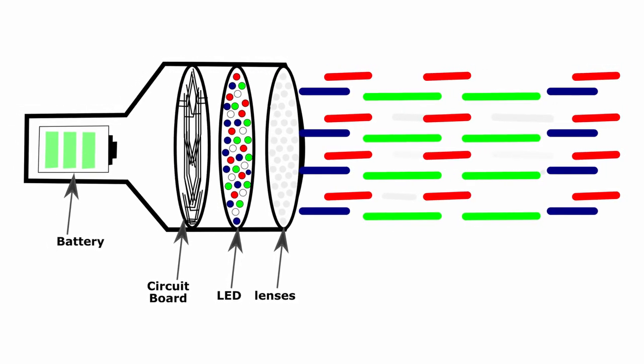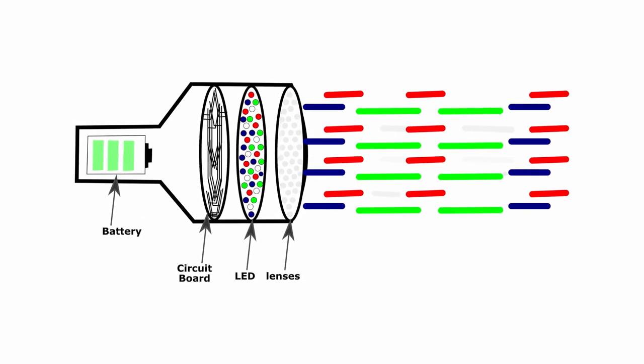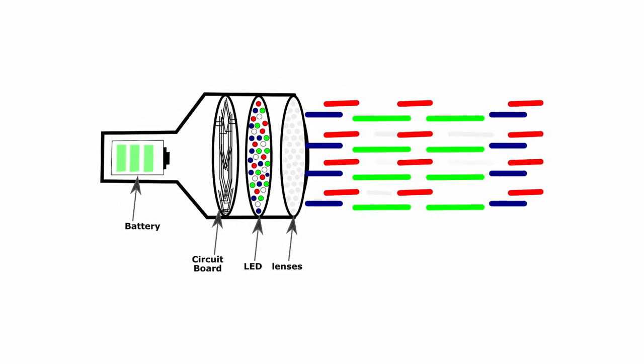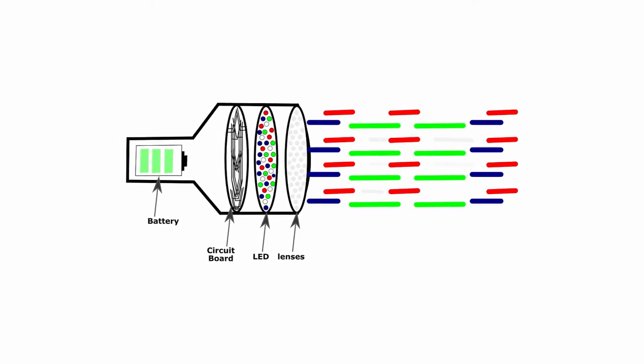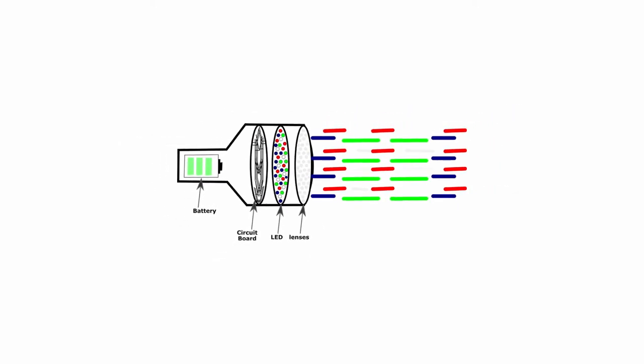The circuit board controls how fast and how much the intensity and the pattern of the flashes will be. So this circuit board can be programmed for different flash patterns or for different kind of LED array. It also has different modes, like if the target is moving or if the target is inactive.